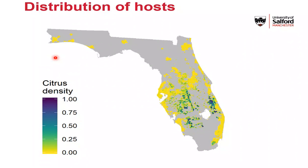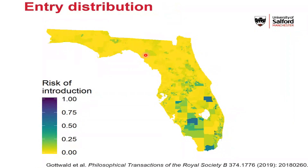Since Huanglongbing is a disease of citrus, a good place to start is looking at where the hosts are. This is the distribution of citrus in Florida from around the time we're interested in — the main citrus growing areas are around the centre of the state, with grayed out areas where citrus levels are low enough to effectively be ignored. We also need to think about where the pathogen may enter the state. The main risk was probably people moving around the world carrying things in their luggage. My co-author Tim Gottwald created a map of the risk of human-assisted movement of the Huanglongbing pathogen into the state — and he's also created a paper showing how this approach can be used for all sorts of different pathogens. I'd strongly recommend it.